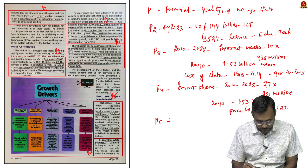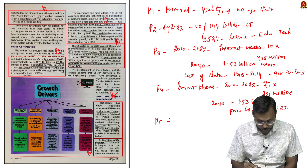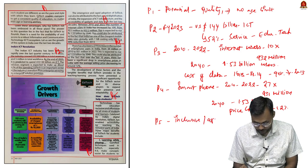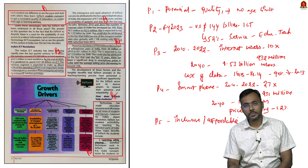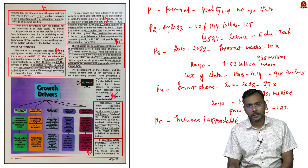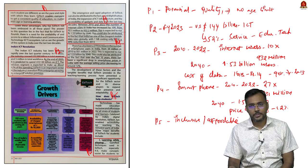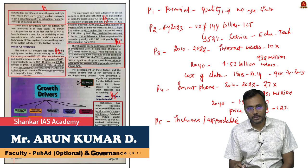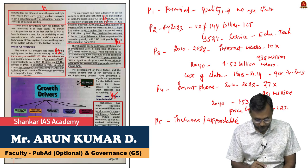Paragraph 5 highlights that ed-tech primarily helps students in two key ways: it is inclusive — meaning anyone having access to technology such as smartphones and data can use it — and it is affordable, since the cost of data is very low.